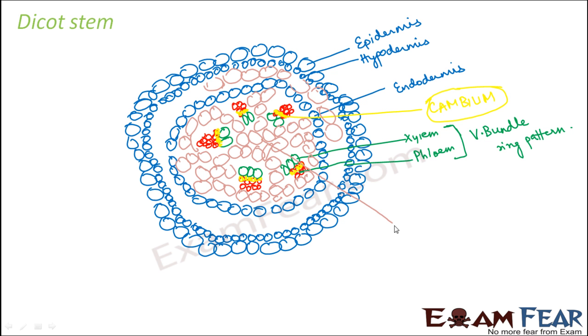What about the pith — that is the central region? The central region is also made up of parenchyma cells. So the pith is made up of parenchyma cells, which fill the entire empty space. Here you can see the pith, which is nothing but parenchyma cells. So this is the structure of the dicot stem.